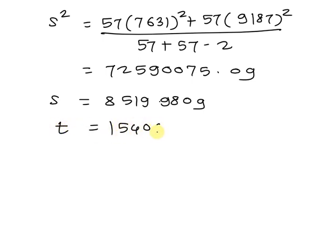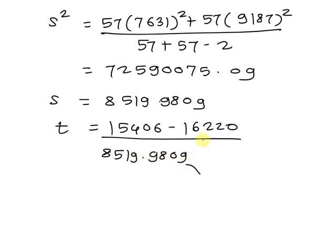Now put the values. Then we get test statistic t equals 15,406 minus 16,220 divided by 8,519.9809 times the square root of 1 over 57 plus 1 over 57.